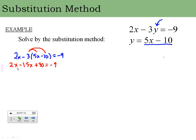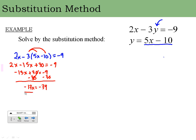So 2x minus 15x is negative 13x, plus 30 equals negative 9. Now I subtract 30 from both sides: negative 13x equals negative 9 plus negative 30, which is negative 39. Then I divide both sides by negative 13.